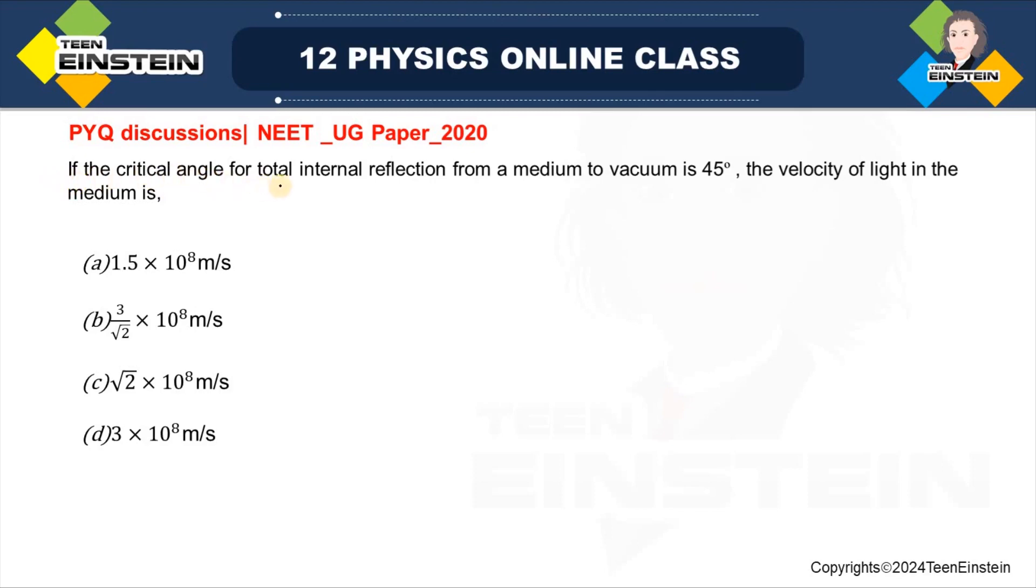The question says, if the critical angle for the total internal reflection from a medium to vacuum is 45 degree. Okay, so theta C is given 45 degree.